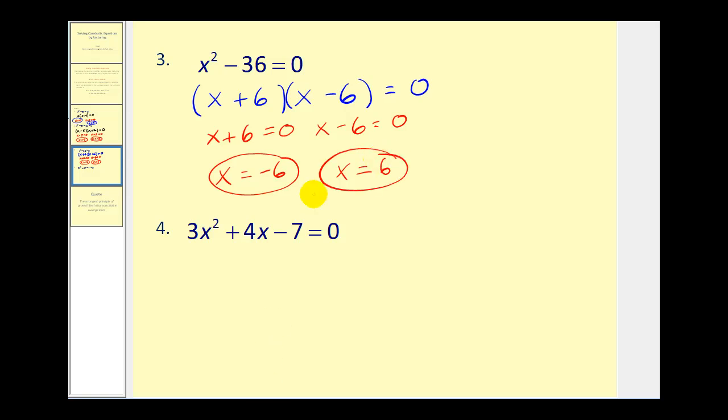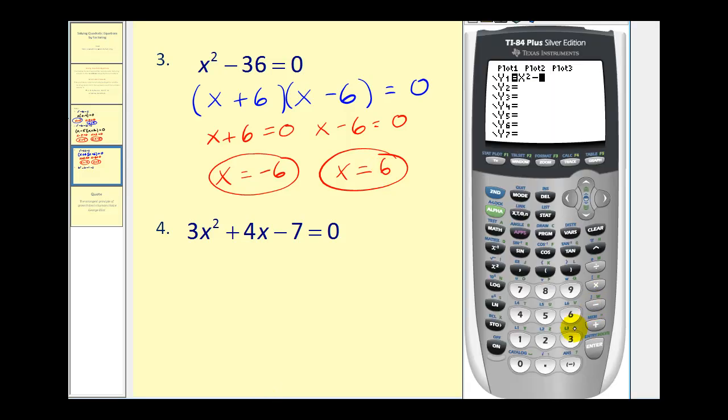Again, graphically, we should find an x-intercept at negative six and positive six. Let's check it. And again, it looks very good.